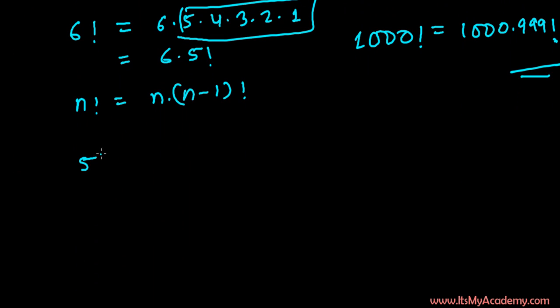We know that if I'm writing 5 factorial, it means 5 times 4 times 3 times 2 times 1. As we learned, factorial is the continued product of the first n natural numbers.